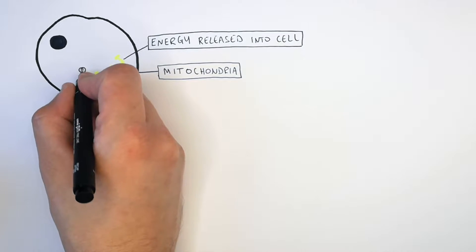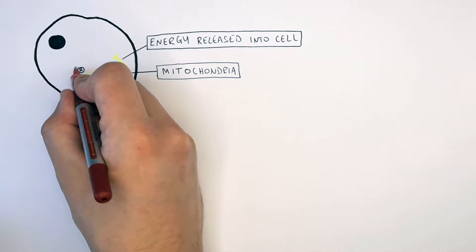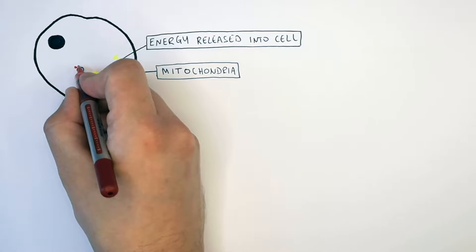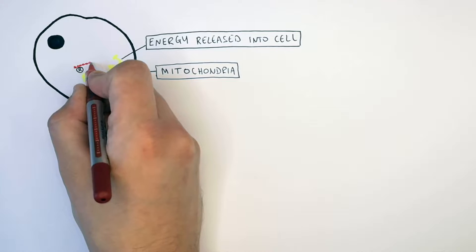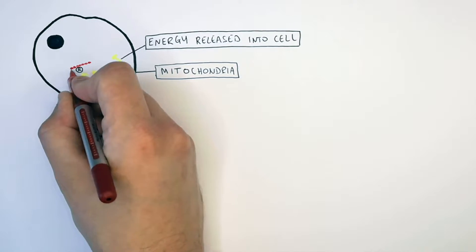This here is a ribosome. Ribosomes produce proteins from amino acids. These ribosomes need the energy that is released from respiration to build larger molecules from smaller ones.